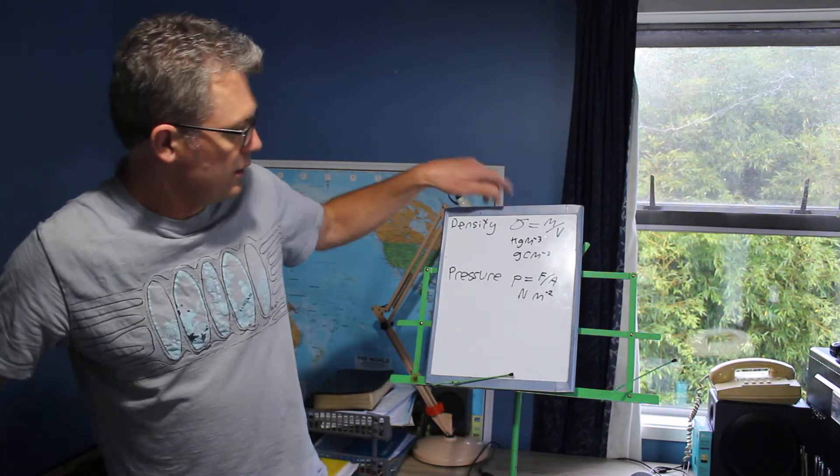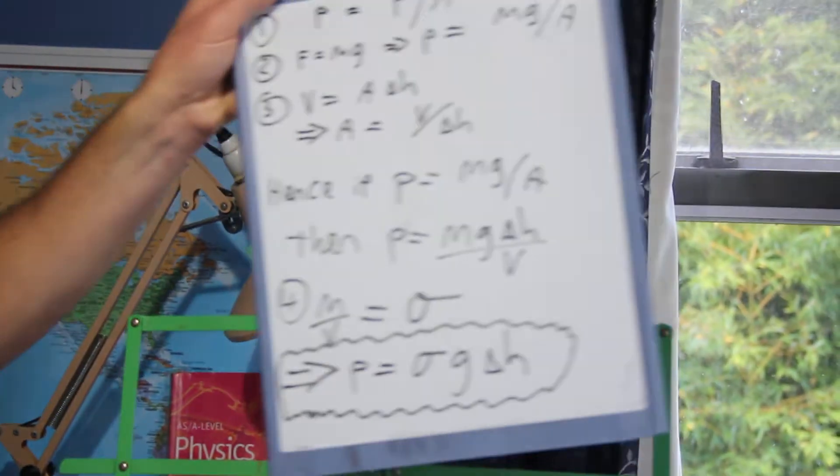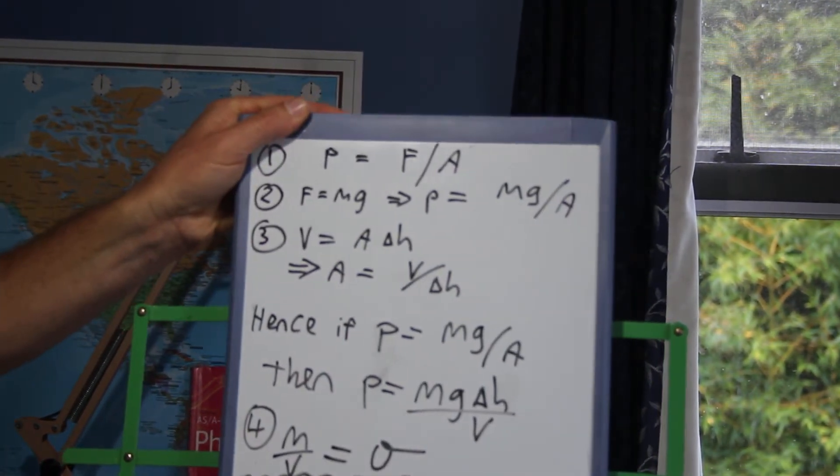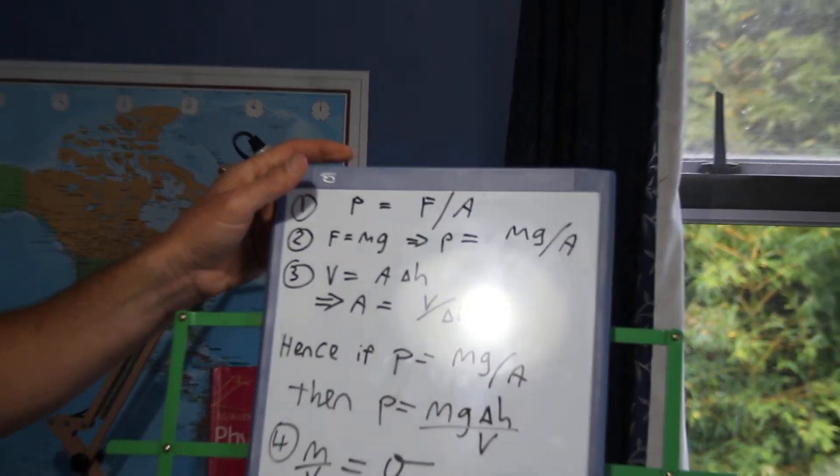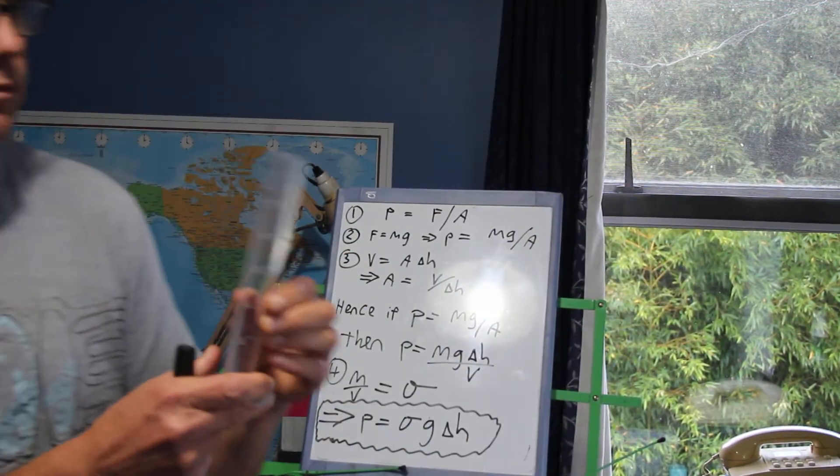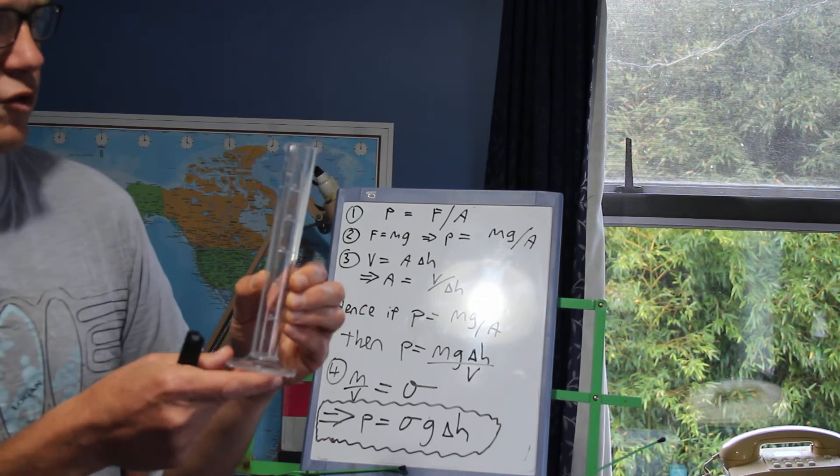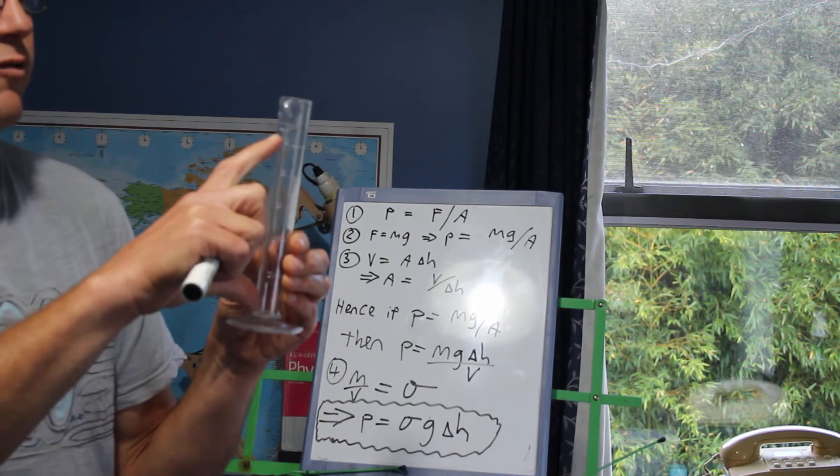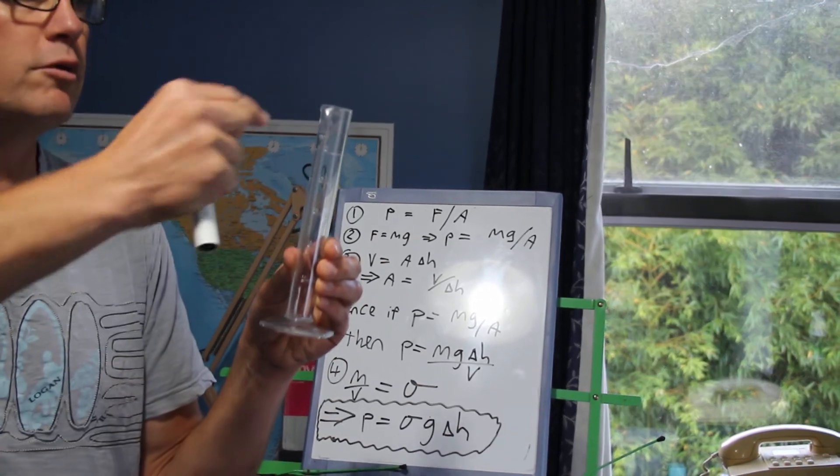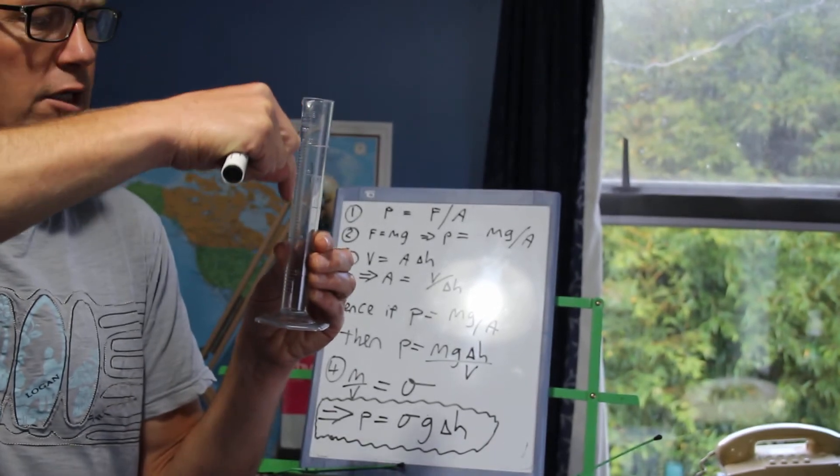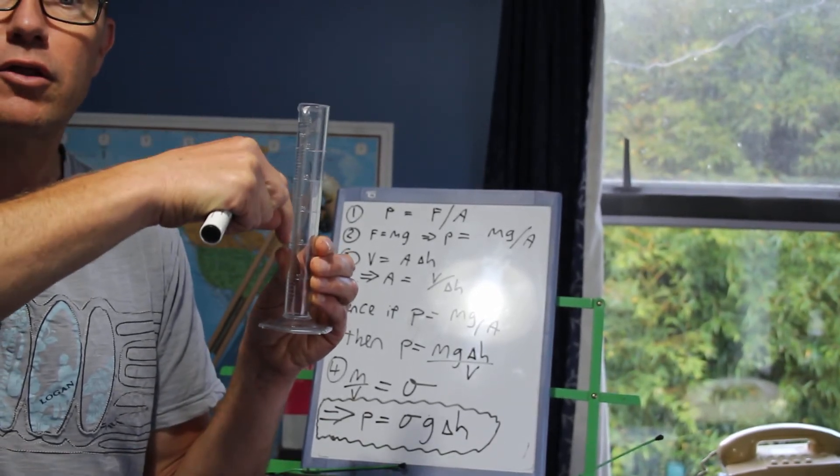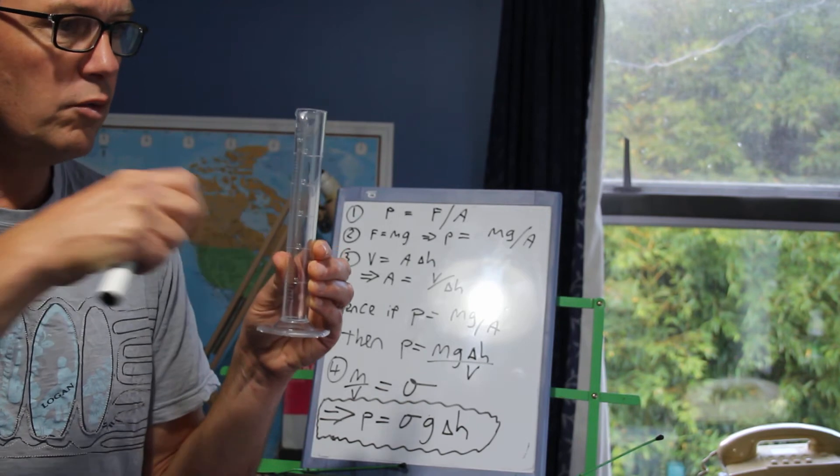So pressure. As we increase in depth and pressure goes up. So if this little measuring cylinder was a giant measuring cylinder and this was 50 meters and you were a tiny little guy and you were diving in and you were trying to go down, down, down. The deeper you go, the greater the pressure would be.